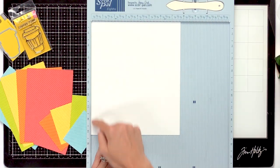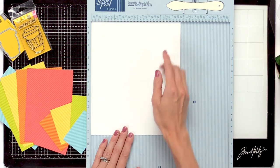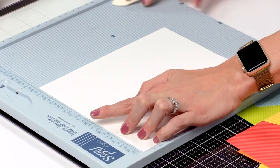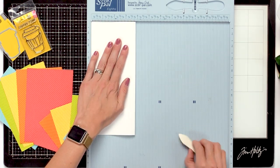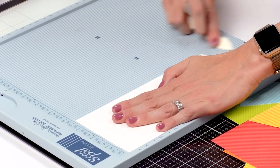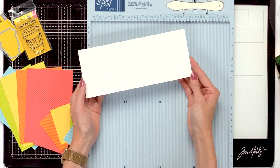I've trimmed my paper down to 9 1⁄4 x 7 3⁄4. I'll now score at 3 7⁄8. And now we've created our A10 card.